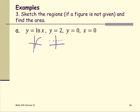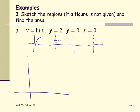Y equals 0 is the x-axis, and x equals 0 is the y-axis. Now you have four pieces — put them all together in one xy plane. You don't have to get a perfect graph, just enough to set up the problem. We have the vertical line x=0, the horizontal lines y=0 and y=2, and the log graph on the positive side of the x-axis.